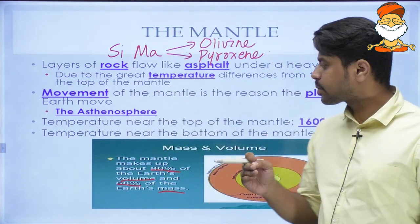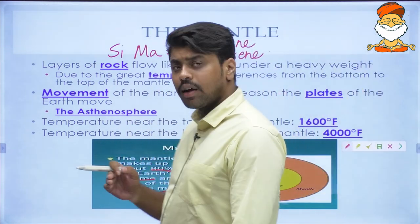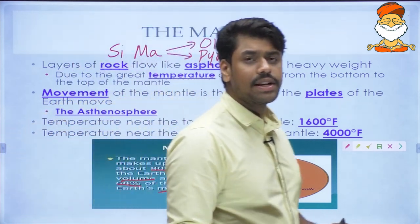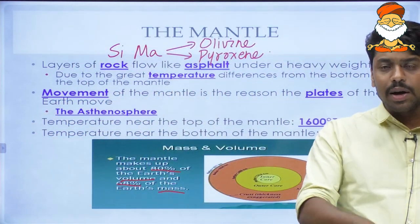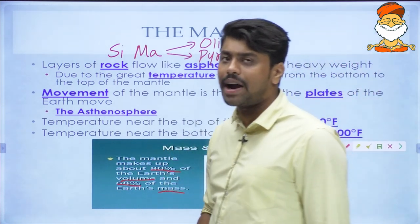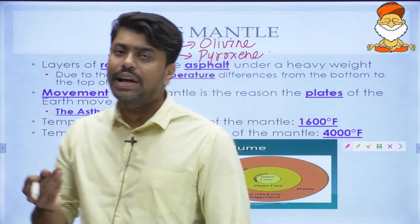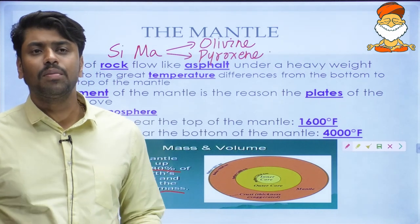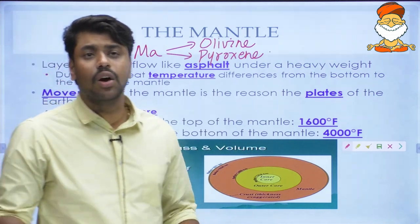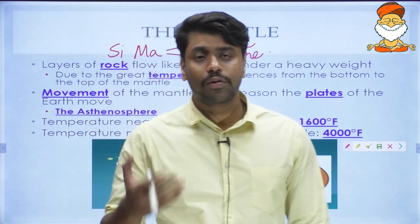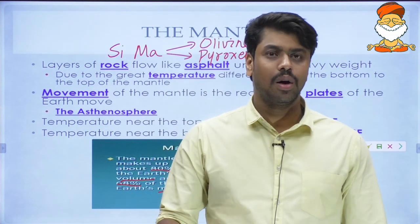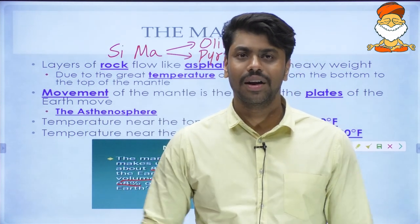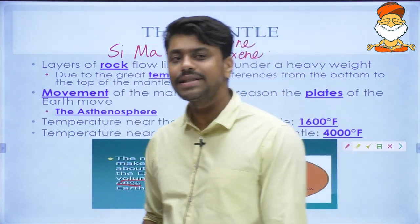There are great temperature differences from the bottom of the mantle to the top. The top of the mantle is near the crust, while the bottom is near the core, which is 5200 degrees Celsius. Obviously the lower mantle, being so close to the core, is going to be extremely hot.